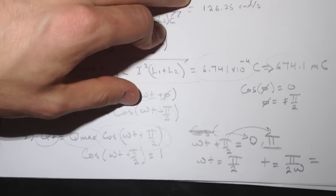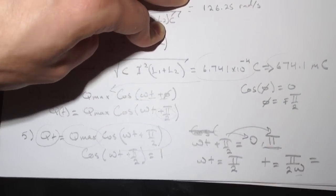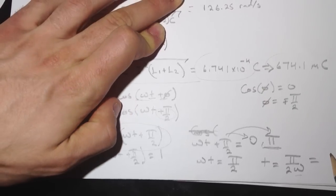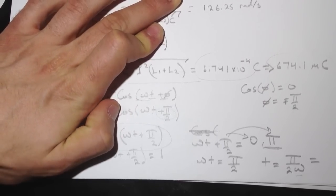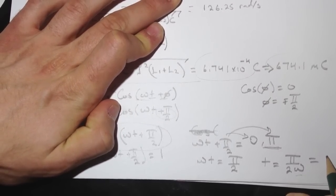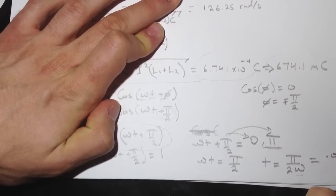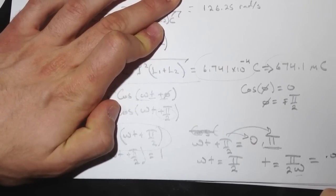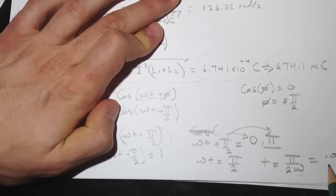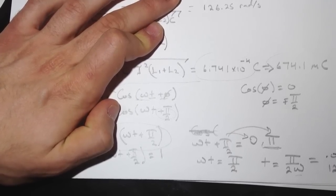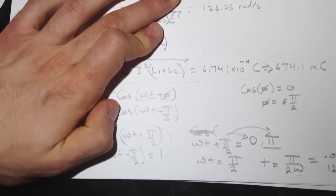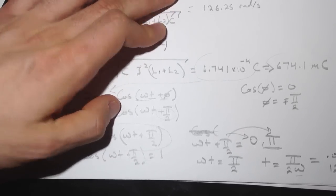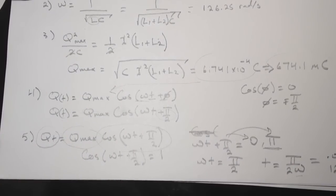So the answer for this is t equal pi over 2 omega. And I got this answer to be—you know omega, you have this omega from before—and then the answer I got for this was 0.0124. This is in seconds, and the question is asking in milliseconds, so watch out for this. So the answer in millisecond is 12.4. Is it in millisecond?